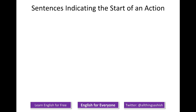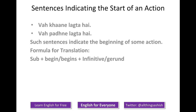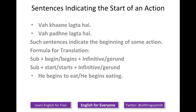Sentences indicating the start of an action. 'Va jaane lagta hai.' Such sentences indicate the beginning of some action. The formula: you can use subject plus 'begin' or 'begins' plus infinitive or gerund. You can also say subject plus 'start' or 'starts' plus infinitive or gerund. Following the first formula: he begins to eat, or he begins eating. Using the second: he starts to read, or he starts reading. It's completely a matter of personal choice which style you decide to go with.